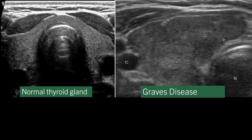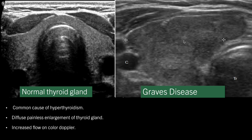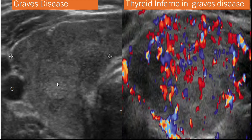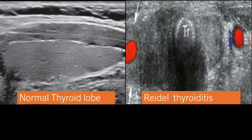Another important disease is Graves' disease. As we know, Graves' disease is the common cause of hyperthyroidism. On ultrasound, the thyroid gland is diffusely enlarged and the echotexture is heterogeneous. On color Doppler, increased flow can be appreciated. There is a specific color flow pattern called 'thyroid inferno,' which is seen in Graves' disease — when color Doppler is applied, this characteristic pattern is observed.